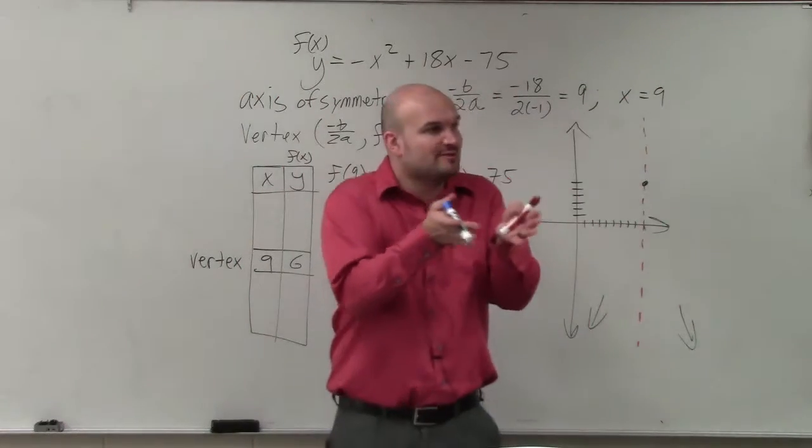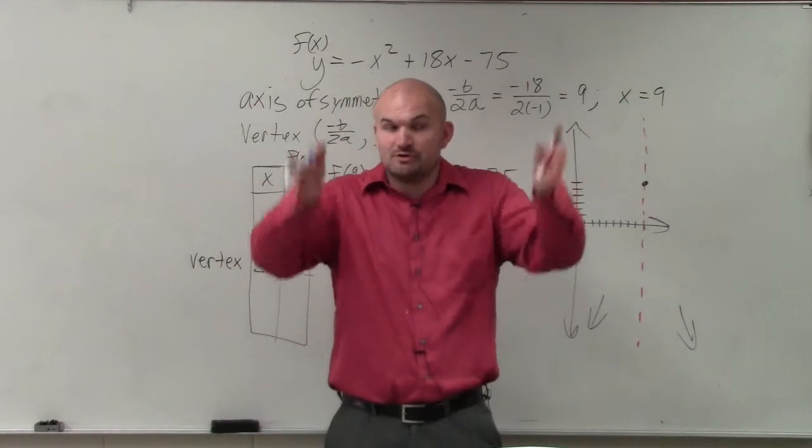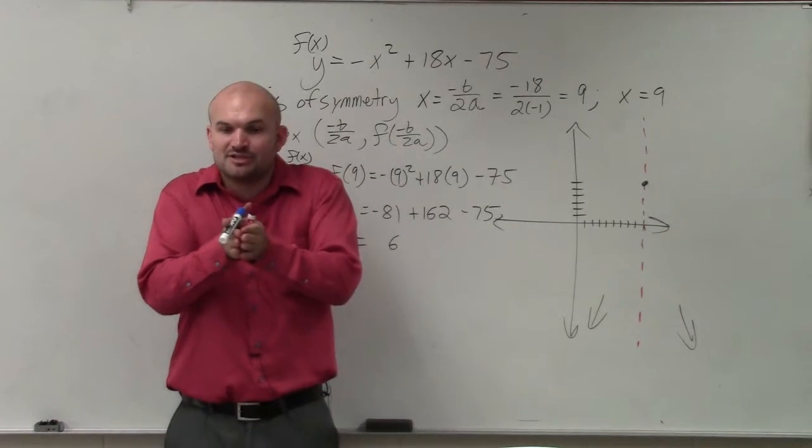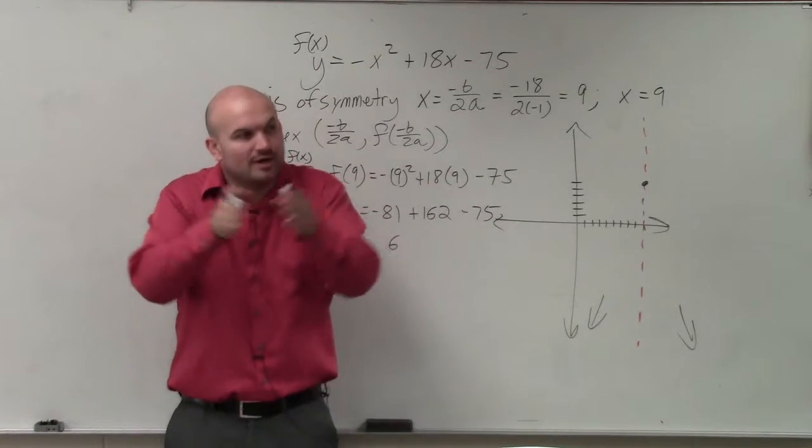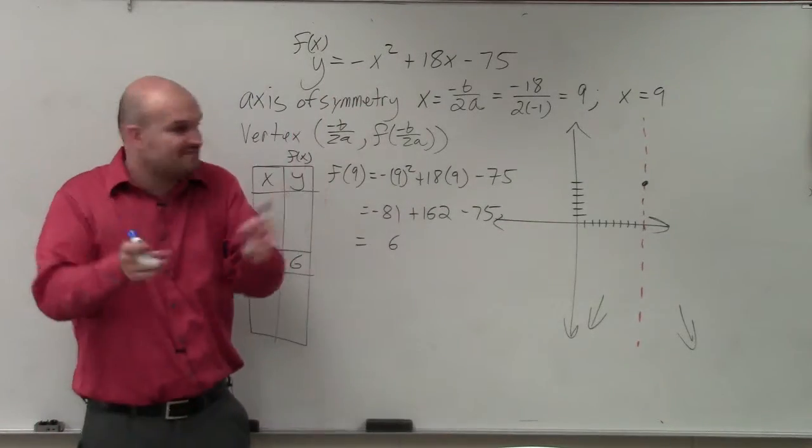If you guys remember, remember when we graphed x squared? The table values for x squared was over 1, up 1. Over 2, up 4, right? Since A is negative, we're simply just going to go over 1, down 1. Over 2, down 4, right? Because A is 1. So it just follows that pattern.